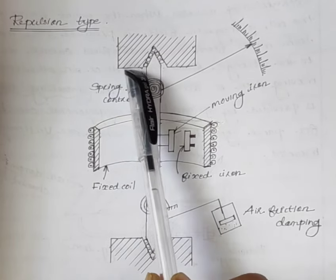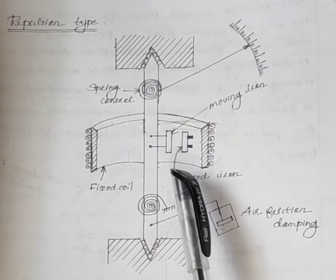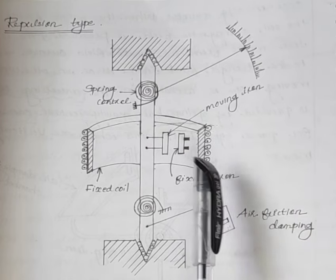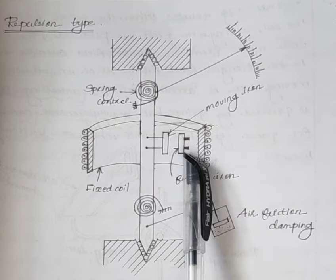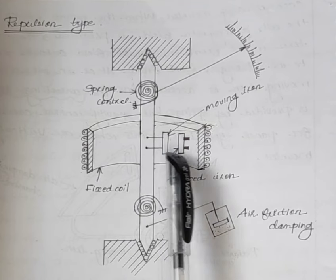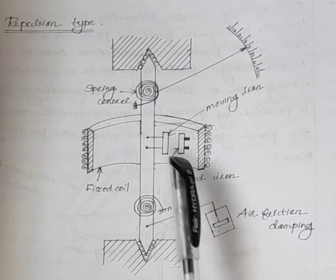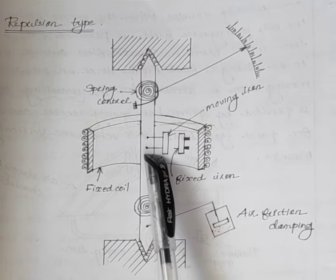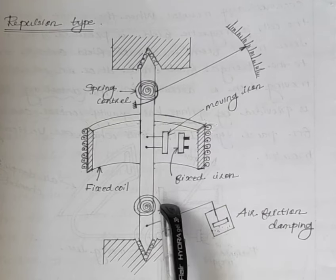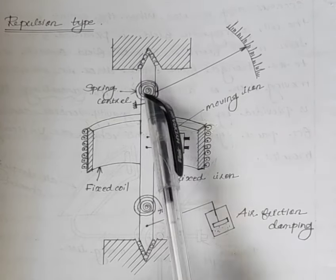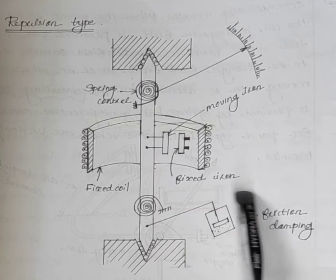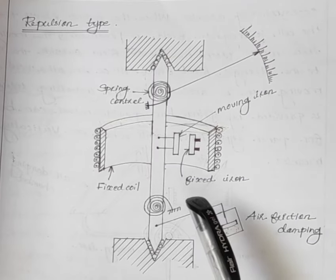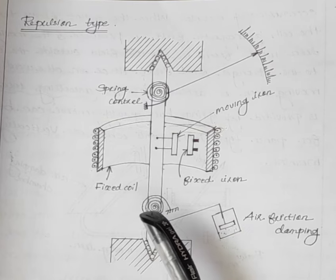Next is the repulsion type moving iron instrument. Here the stationary coil acts as an electromagnet, and the instrument has two iron plates — one is fixed and another one is movable, which is attached to the moving system. The controlling torque is provided by spring control; two springs are used. The damping torque is provided by air friction damping.